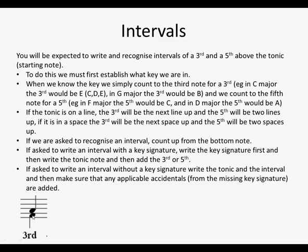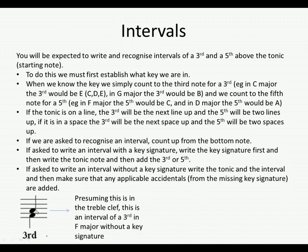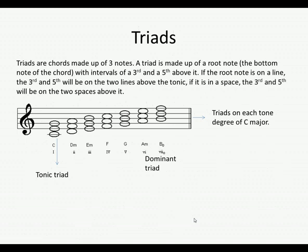Here's an example of a third — you can see how the tonic is in a space and therefore the third would be in the space above. Let's pretend this is in the treble clef since the clef was accidentally cut out. You can see this is an interval of a third in F major without a key signature, so it's an F and an A. Here we've got our treble clef and we can see a C and a G — this is an interval of a fifth in C major.